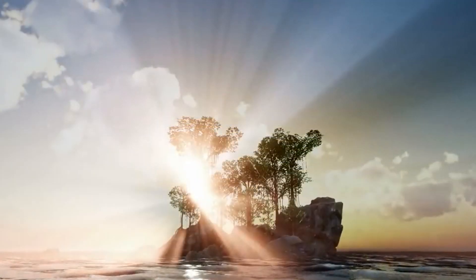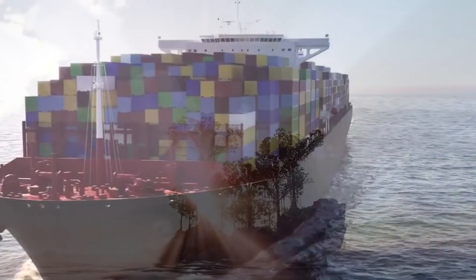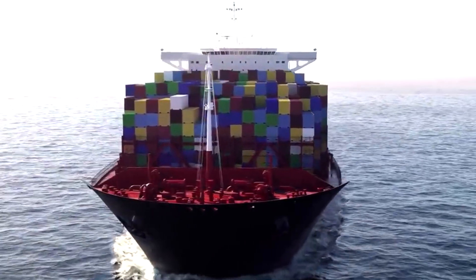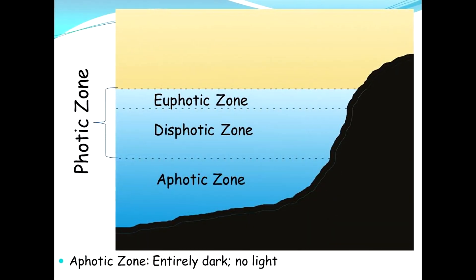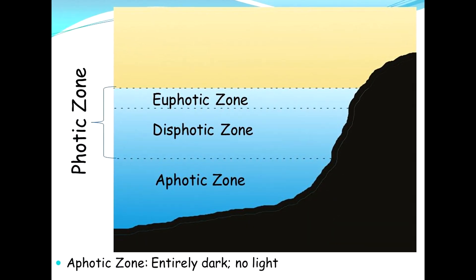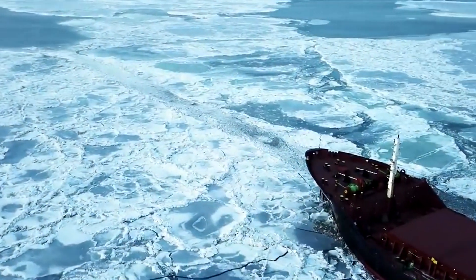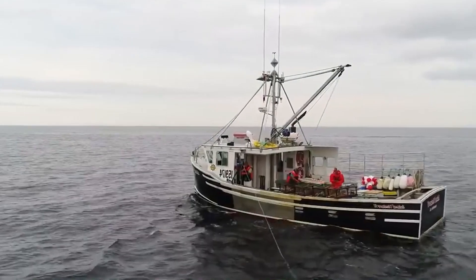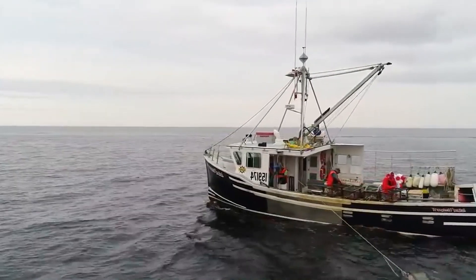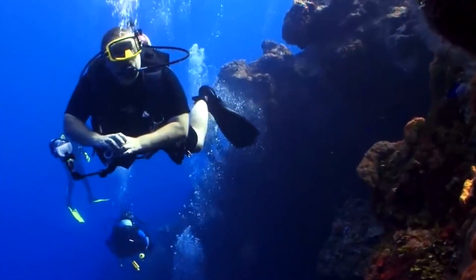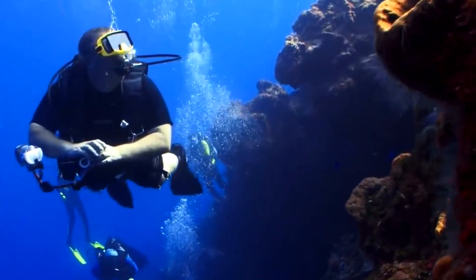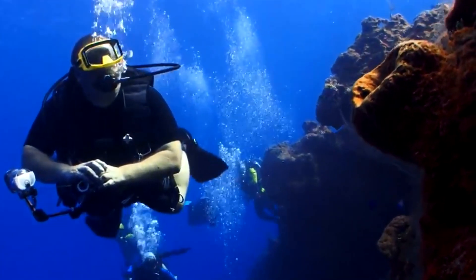The Twilight Zone of the ocean, also known as the Dysphotic Zone, is the middle layer of ocean waters which extends to a depth of 200 meters to 2 kilometers. Near the upper boundary of this area, primary production through photosynthesis is no longer possible, and at depths below this zone, light from the surface practically does not penetrate, creating an atmosphere of near-total darkness.